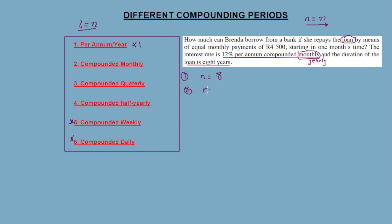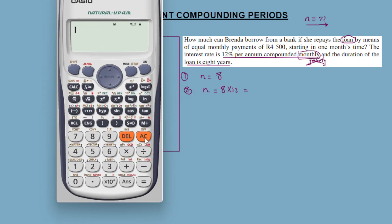Number two: n is equal to... if the 12% per annum is compounded monthly, the question is: in 8 years, how many months are there? We multiply by 12. 8 times 12 equals 96.